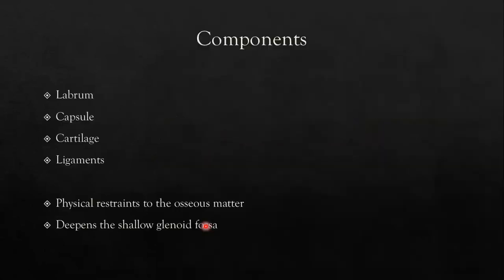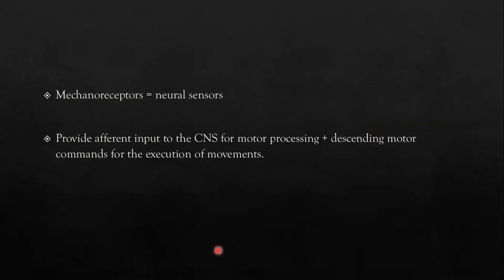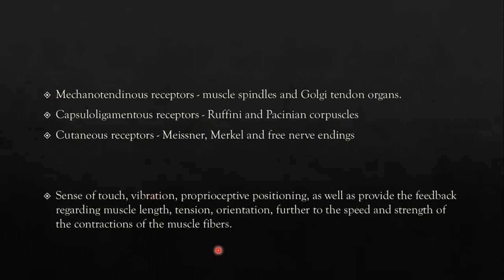The static components of the shoulder joint include labrum, capsule, cartilage, ligaments, physical restraints, and osseous matter, deepening the shallow glenoid fossa. Mechanoreceptors are neural sensors that provide continuous afferent input to the CNS for motor processing and descending motor commands. The different mechanoreceptors include muscle spindles and Golgi tendon organs, capsuloligamentous receptors like Ruffini and Pacinian corpuscles, and cutaneous receptors such as Meissner, Merkel, and free nerve endings. They provide information about touch, vibration, joint position in space, and feedback regarding muscle strength, length, tension, orientation, and speed of muscle fiber contractions.